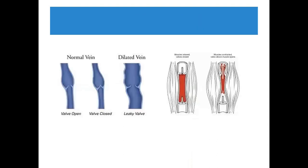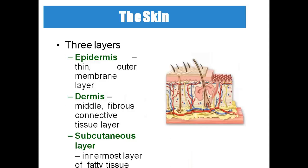During hot temperature, widening of the arteries or veins occurs. During cold climate, narrowing of the arteries occurs. The three layers of skin are: epidermis — the outermost layer; dermis — the middle layer; and subcutaneous layer — the innermost layer.